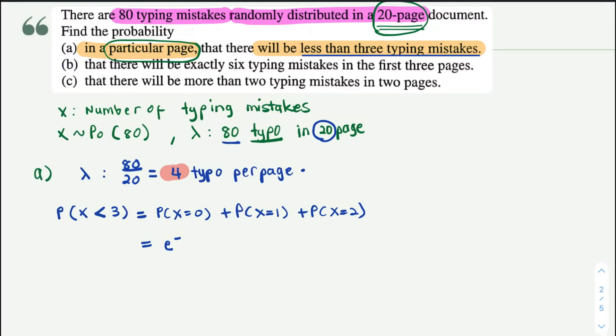So e^(-λ) is e^(-4), 4^0 over 0!, plus e^(-4) × 4^1 over 1!, plus e^(-4) × 4^2 over 2!.